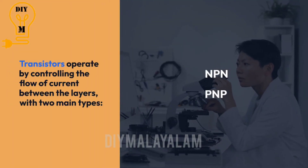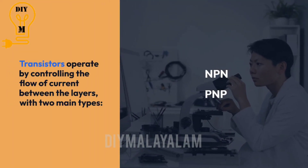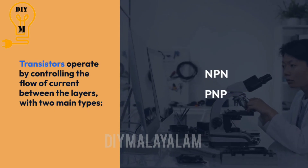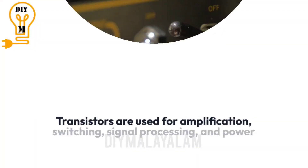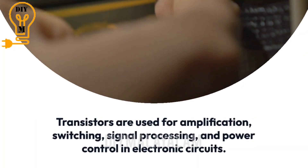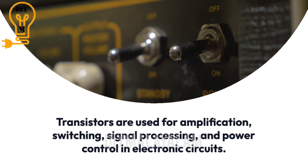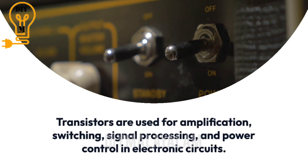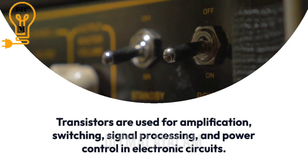These layers can be either N-type or P-type semiconductors, determining the type of transistor — whether NPN or PNP. The operation of a transistor is based on controlling the flow of current between the layers.